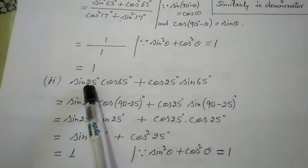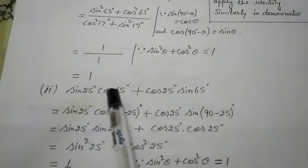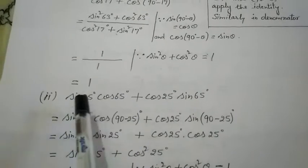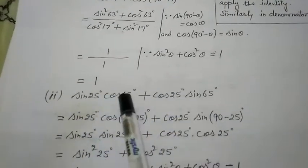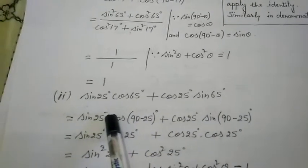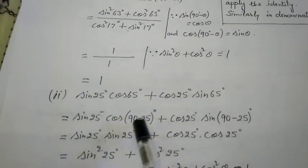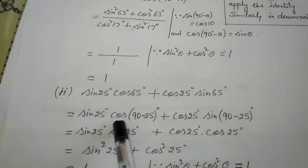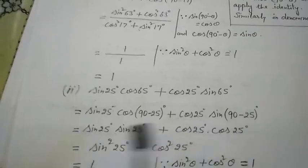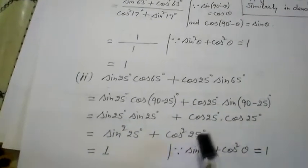For the second part, sin appears at 25° and 65°. Since 25 + 65 = 90, we change 65° to (90 − 25°). The T-ratio stays the same. Applying the identity cos(90 − θ) = sin θ and sin(90 − θ) = cos θ, we get sin θ · sin θ + cos θ · cos θ with theta = 25°. This gives sin²25° + cos²25° = 1. The identity is applied and the answer is 1.